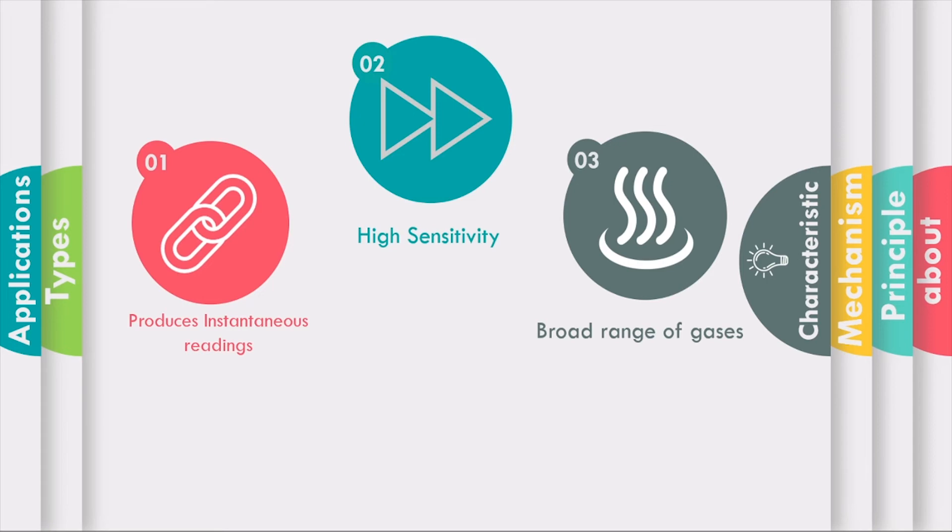Second is its high sensitivity because of its concentration that ranges up to parts per billion to 10,000 parts per million. Lastly, it has a broad range of gases since PID is commonly used as a detector in gas chromatography.